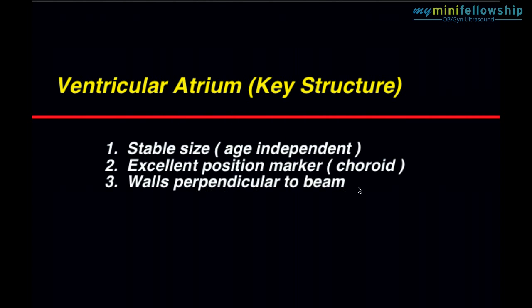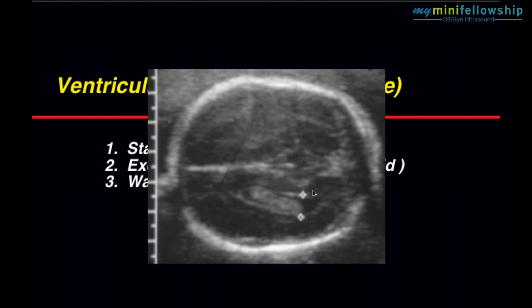The walls of the ventricular atrium are reasonably perpendicular to the direction of beam travel, which means that they will specularly reflect, which means they'll be easier for us to see. Indeed, you can see that the medial wall is a better specular reflector than the lateral wall, and that is also highly fortunate.